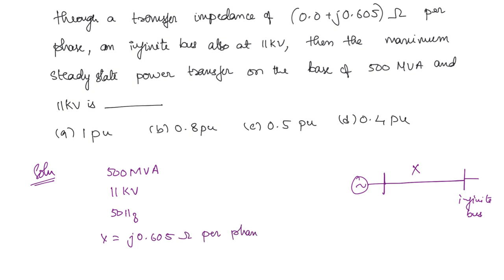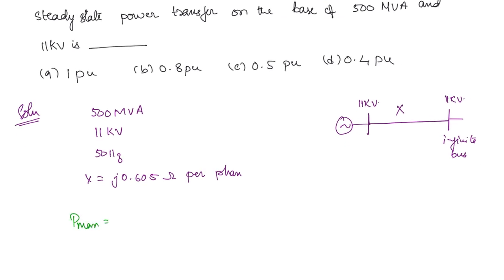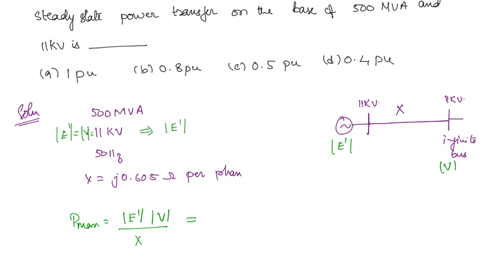Remember, 0.605 ohms is the per-phase value. Since both the generator voltage E and the infinite bus voltage V are at 11 kV, and we want values on the 11 kV base, both E and V in per unit equal 1 per unit. We also need to find X in per unit.